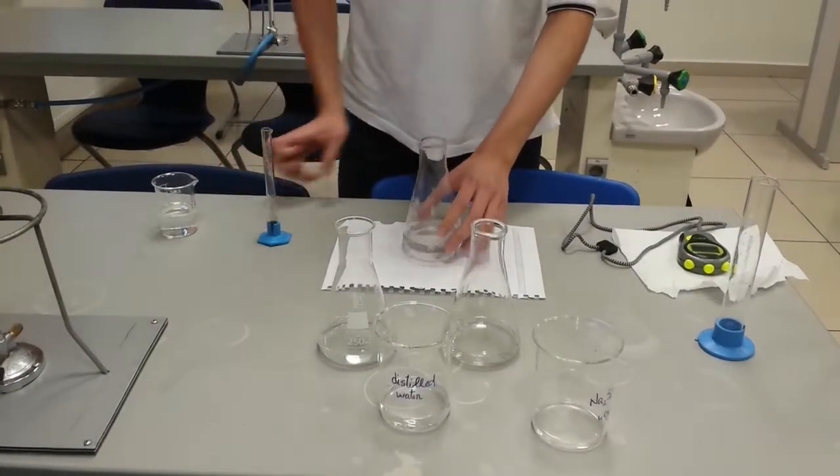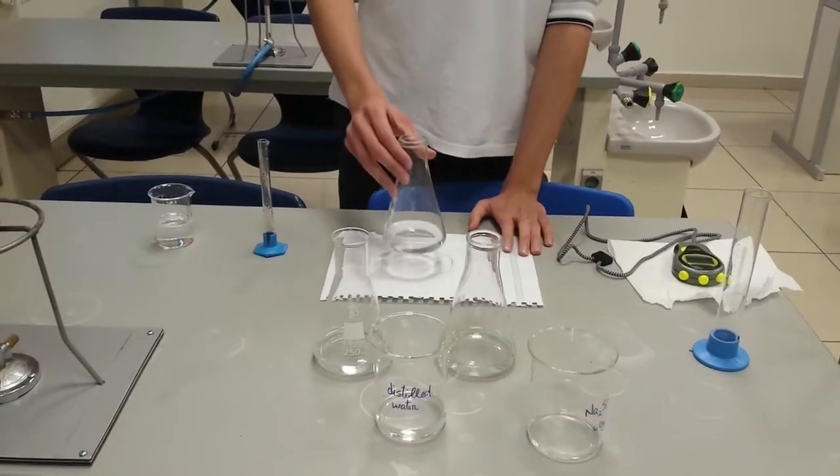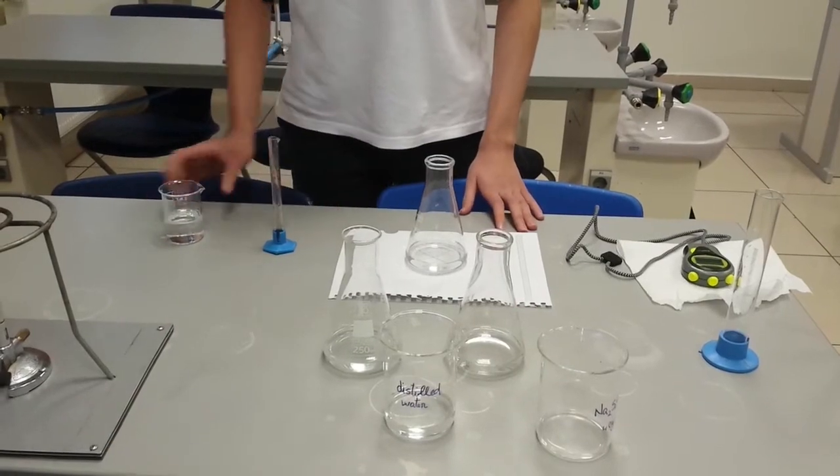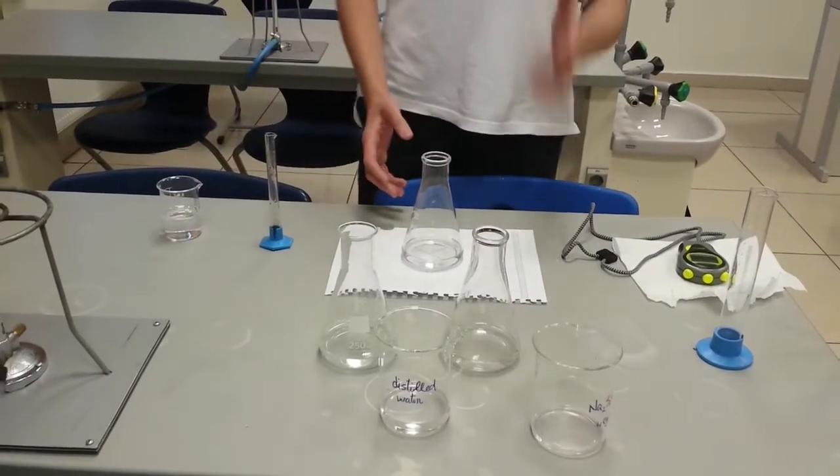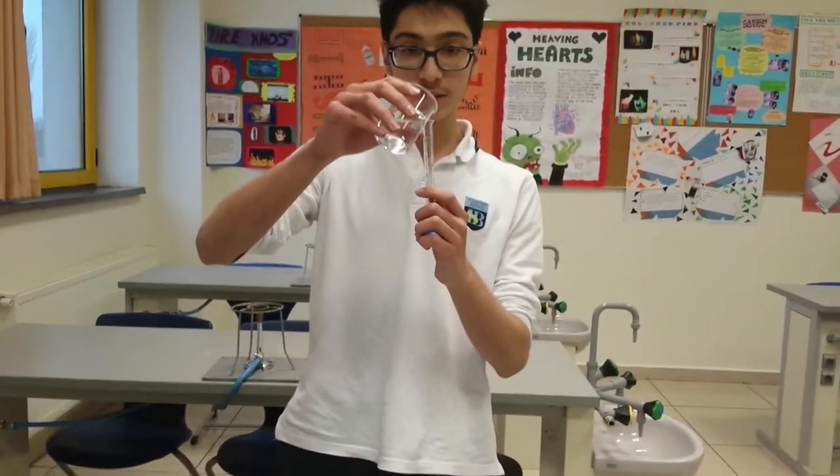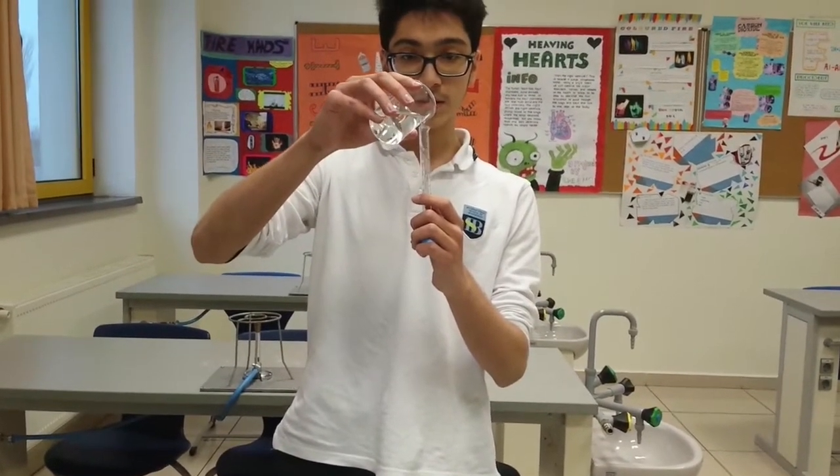I have 50 ml of sodium thiosulfate with zero distilled water. This means that it has the highest concentration. I'll just add now 10 ml of hydrochloric acid to trigger the reaction.